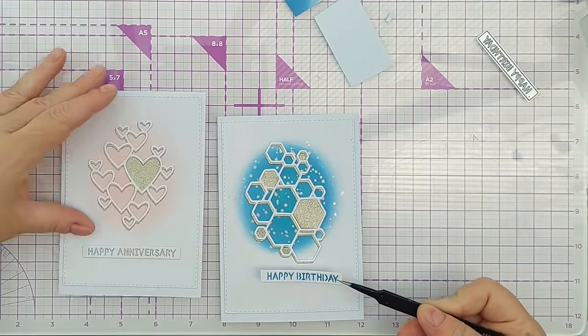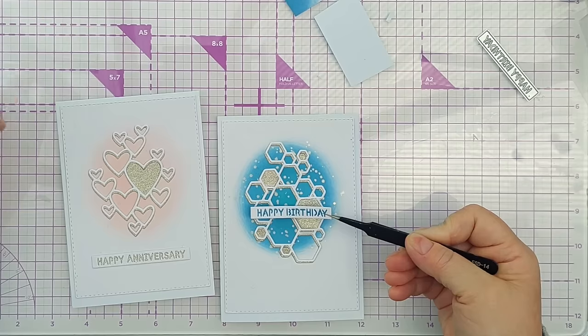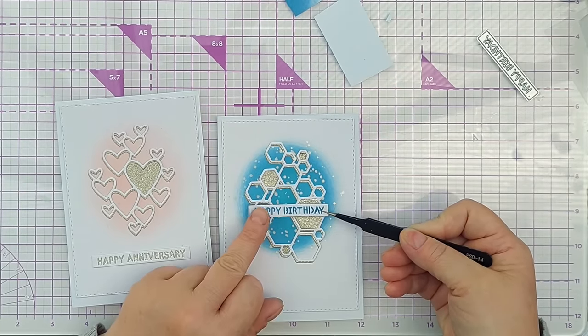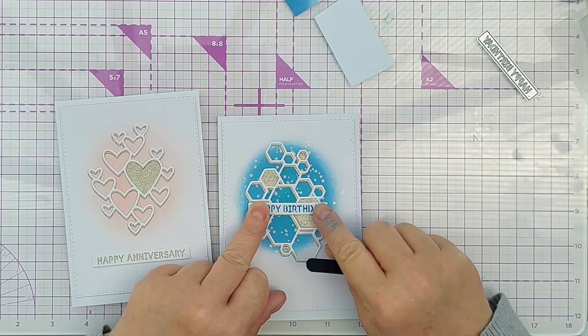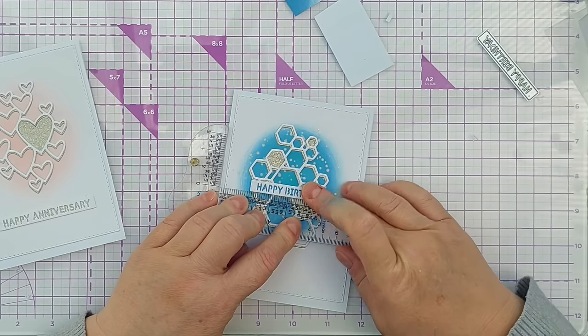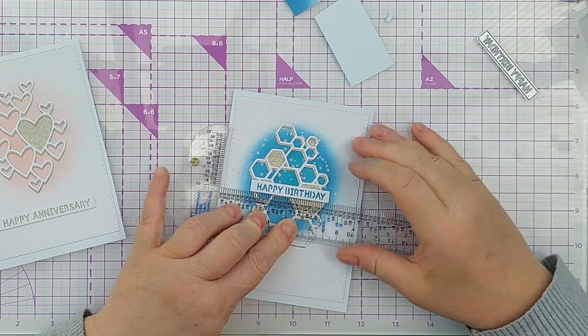Pop this on here. So with a happy birthday I pop that down there. I think I might add it on top of this, maybe about there. I'll just use my T-square ruler to make sure that that is straight.